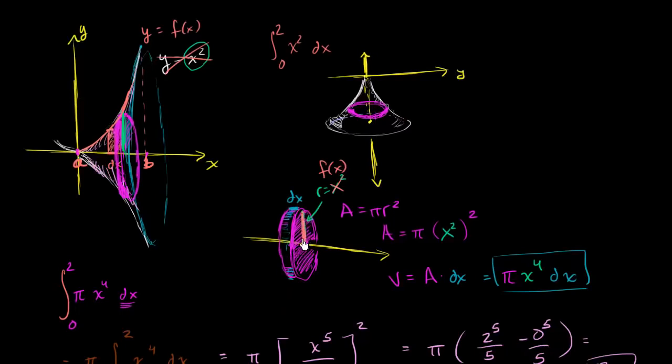The area of the face of this disk is going to be π times our radius squared. So our radius is f(x), and we're just going to square it. That's the area of this face right over here.